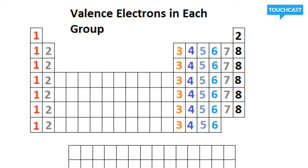Alright, this periodic table demonstrates what I just told you, that every element inside the same group will have the same number of valence electrons. For example, everything in group 1 has one valence electron. Everything in group 2, 2, so forth and so on.